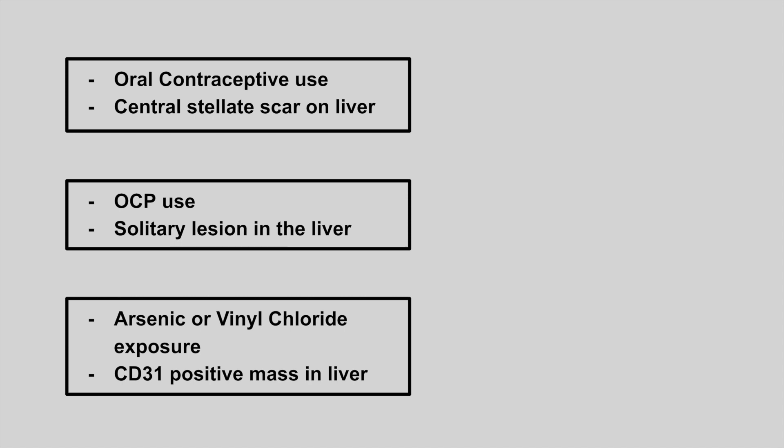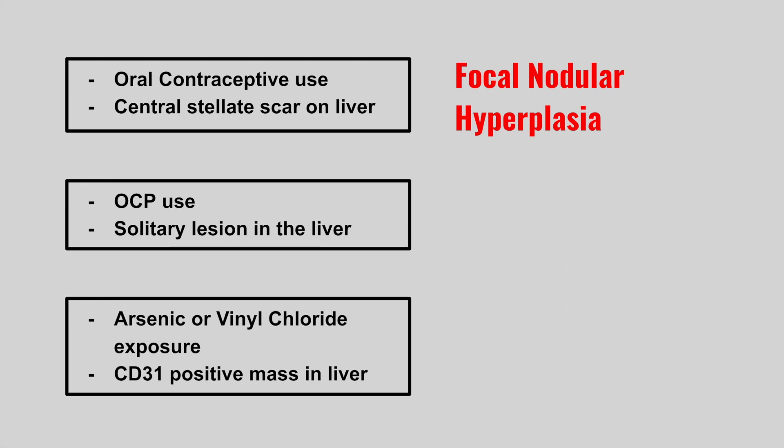The next patient has a history of using oral contraceptives and has a central stellate scar on the liver. This is focal nodular hyperplasia. The next patient is also using oral contraceptives, but this time there is a solitary lesion in the liver. This is a hepatic adenoma.